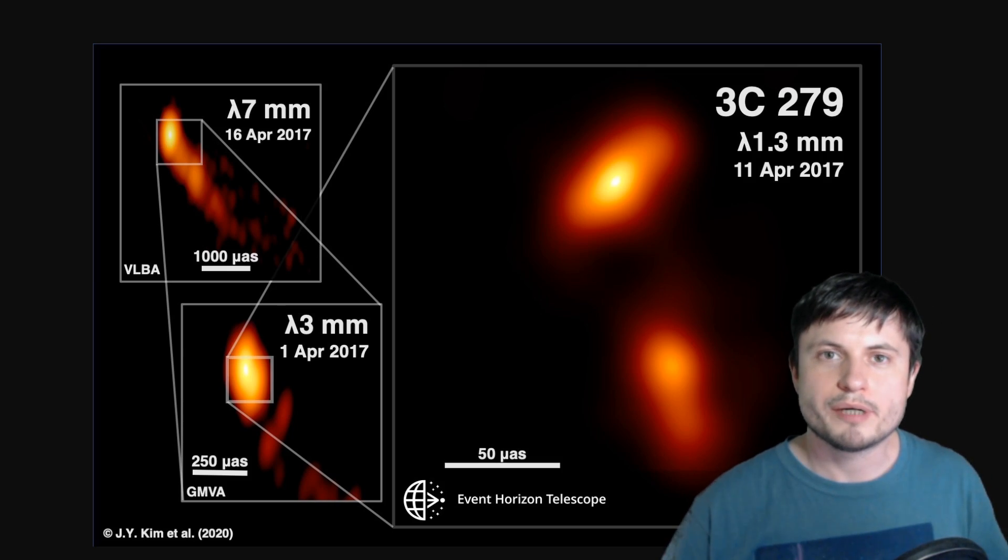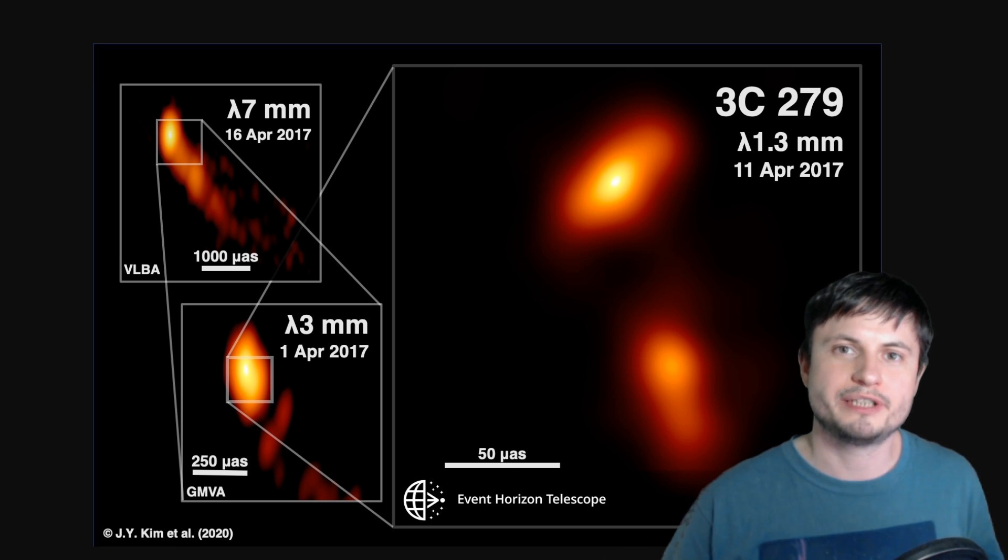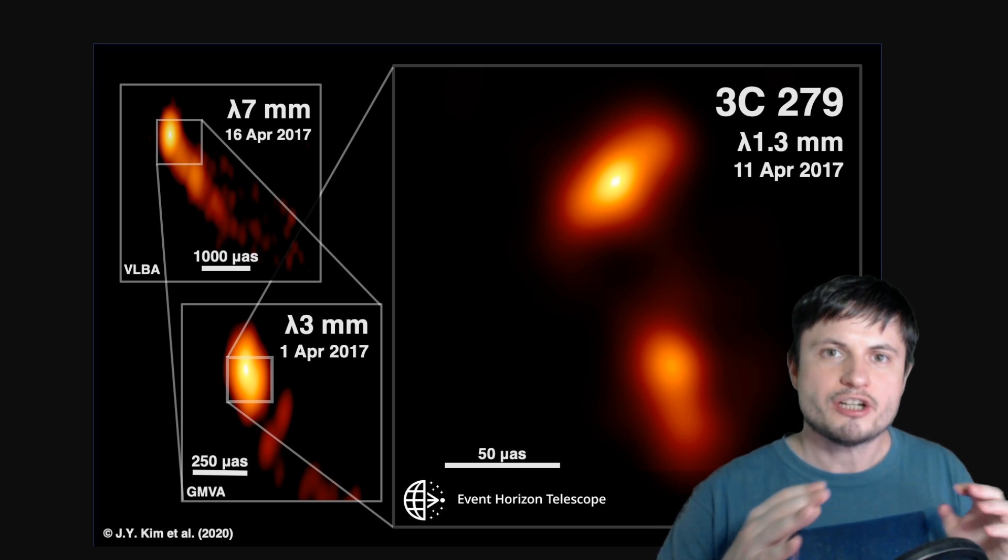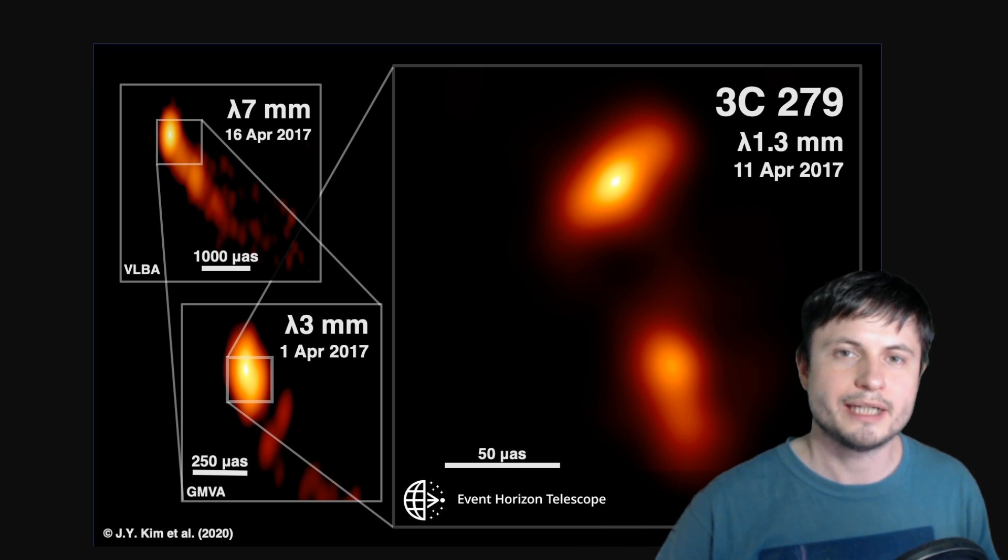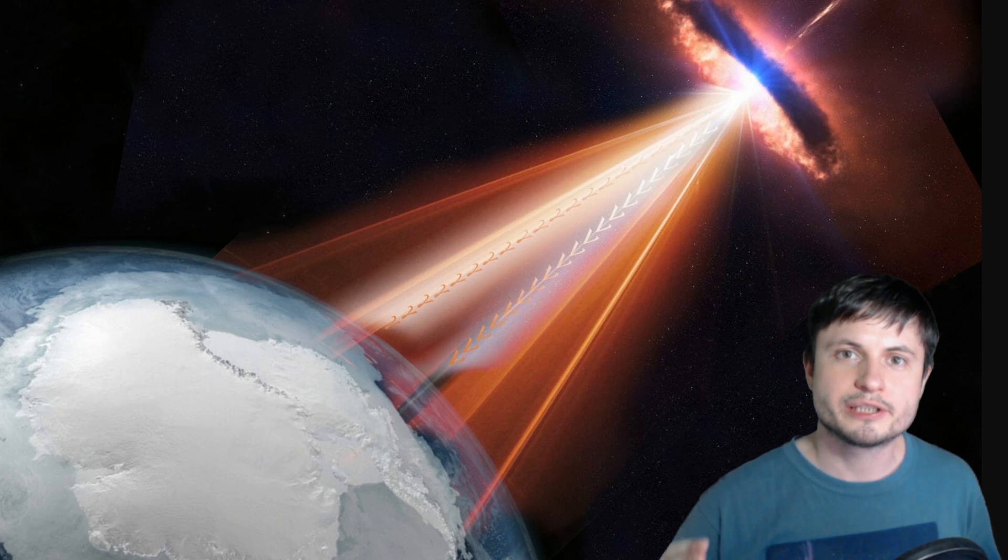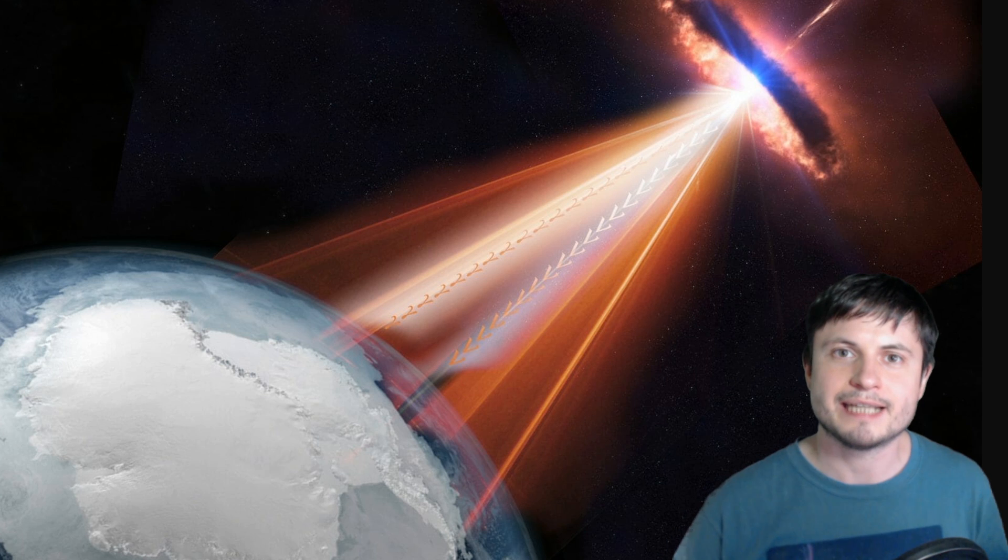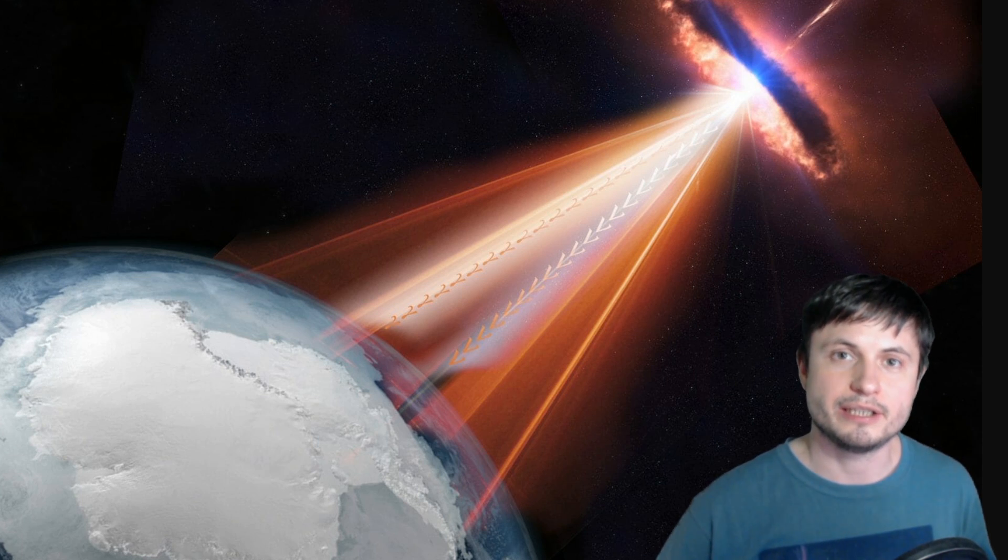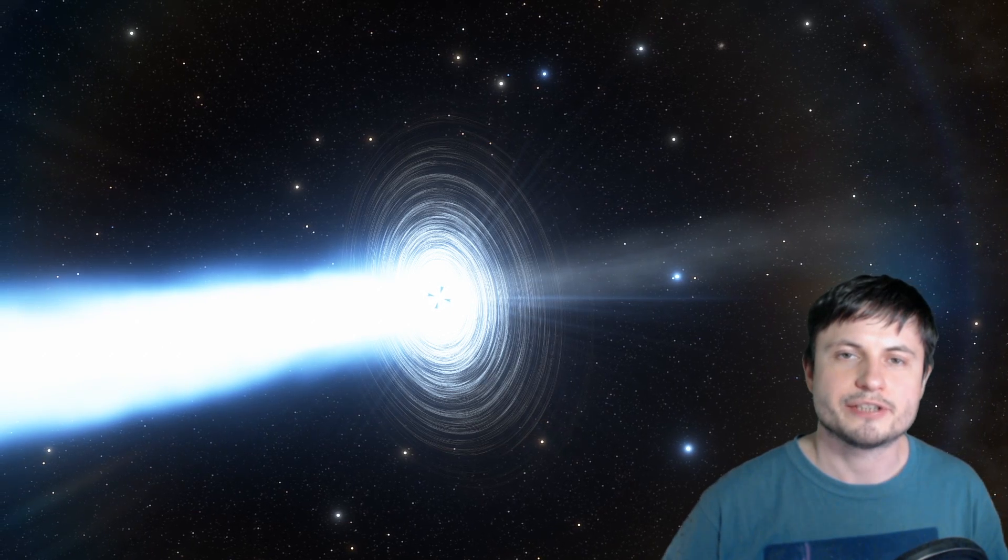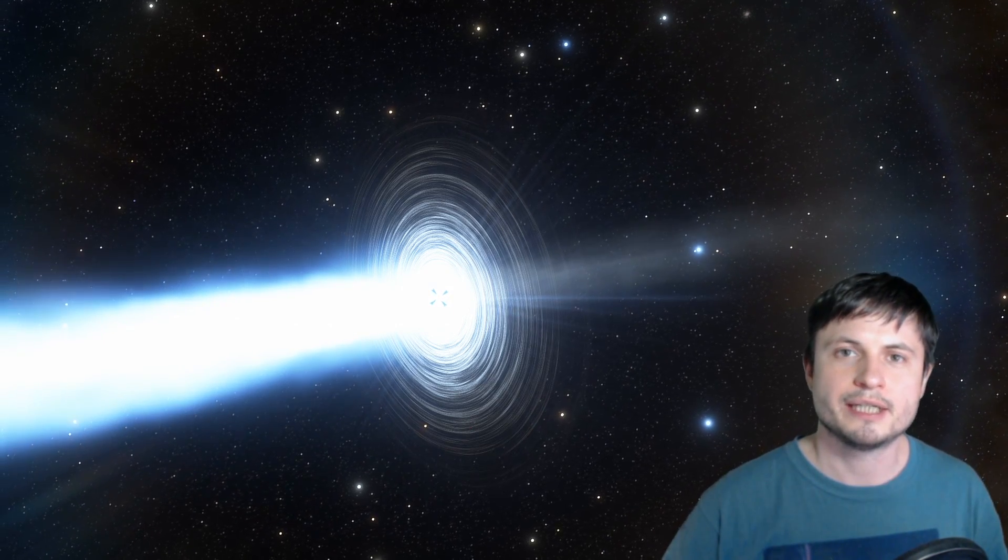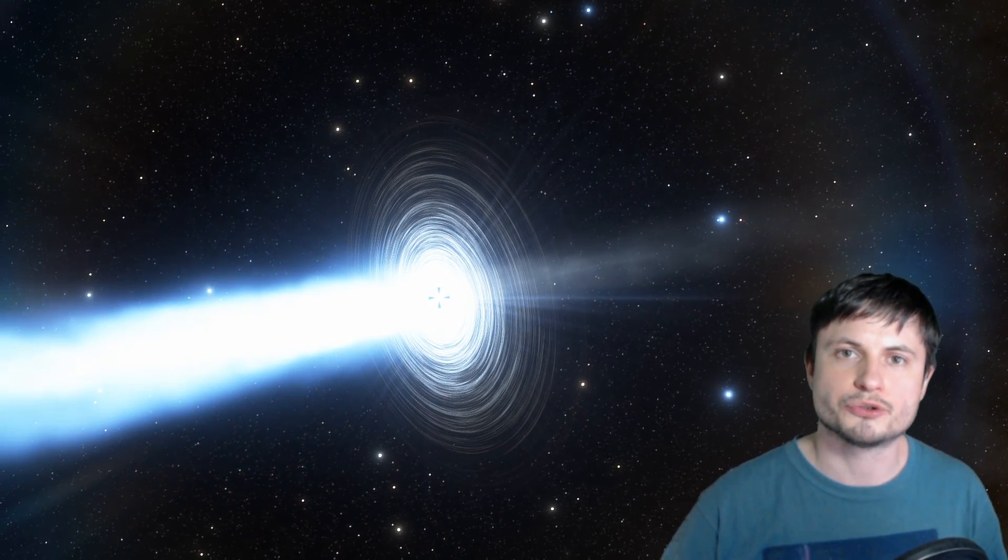And one thing we knew about 3C279 even before this study is that this is one of the most unpredictable and most variable blazars out there. The entire spectrum of light that it has, including visual light, radio light, x-ray light, seems to change a lot. And its most extreme period was actually back in 1987 and lasted for about 4 years, when it actually became the brightest gamma ray object in the entire universe.